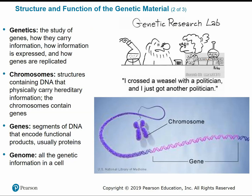Looking at the structure and function of genetic material — when we talk about genetics, we're talking about the study of genes: how they carry information, how that information is expressed via traits, and how genes are replicated. Chromosomes are the structures that physically contain and carry the DNA. A gene is a specific segment or region of the chromosome that codes for one functional protein. The genome refers to all of the genetic information in a single cell.